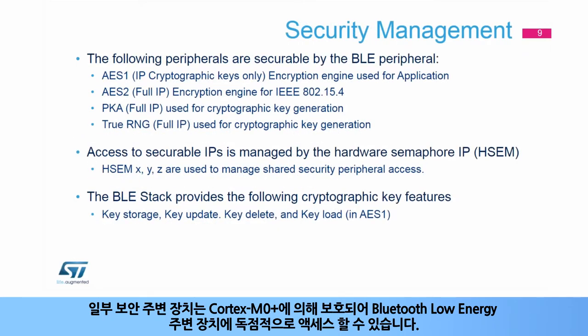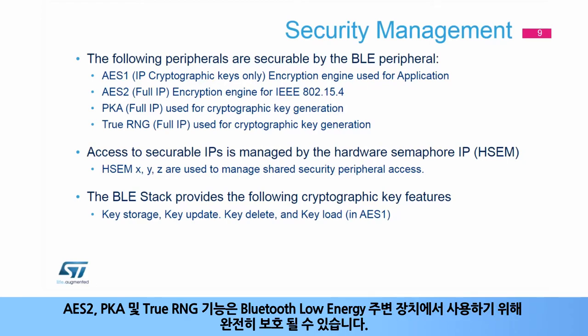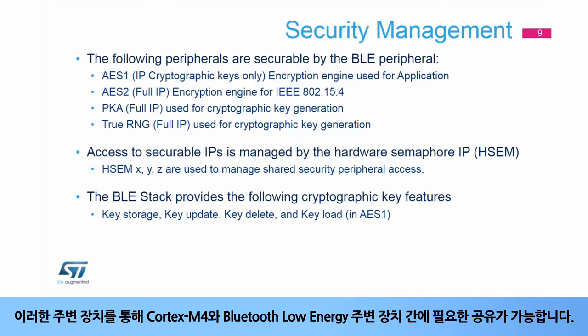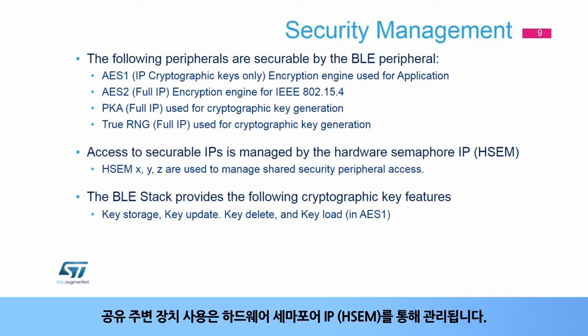Some security peripherals are securable by the Cortex-M0+, to grant exclusive access to the Bluetooth Low Energy peripheral. The AES-2, PKA, and True-RNG functions can be fully secured for use by the BLE peripheral. The AES-1 cryptographic keys can be secured so that secure keys can be used to encrypt data by the application Cortex-M4. These peripherals allow sharing on a needed basis between the Cortex-M4 and the BLE peripheral, managed via the hardware semaphore IP, or HSEM.